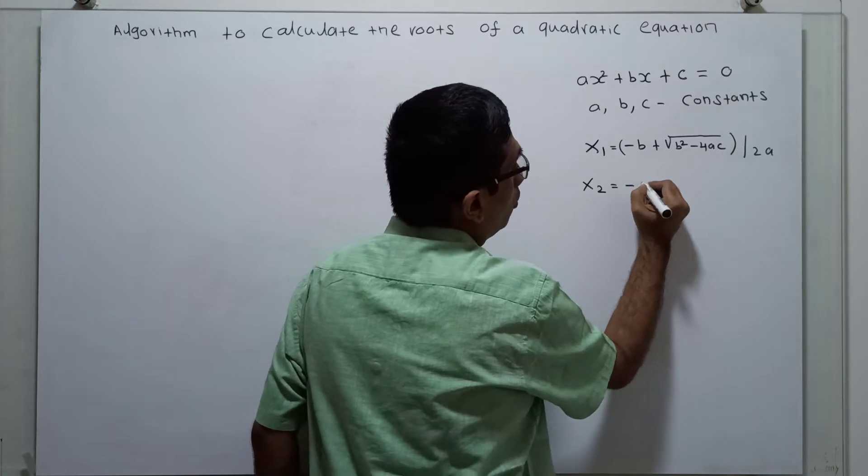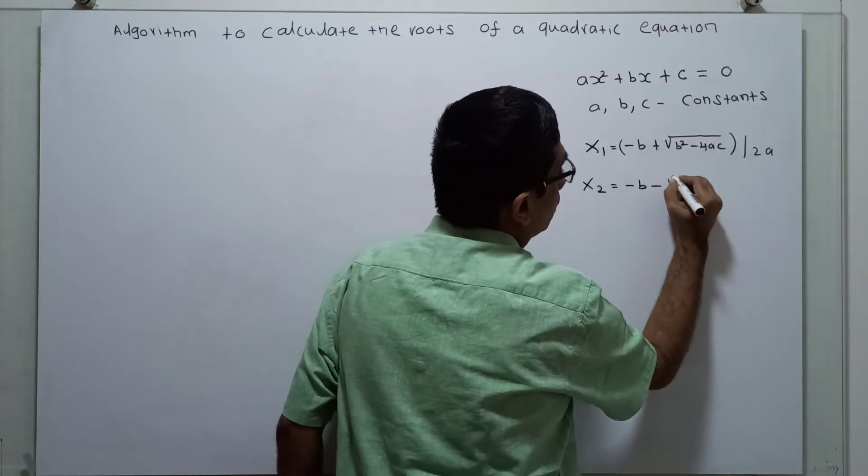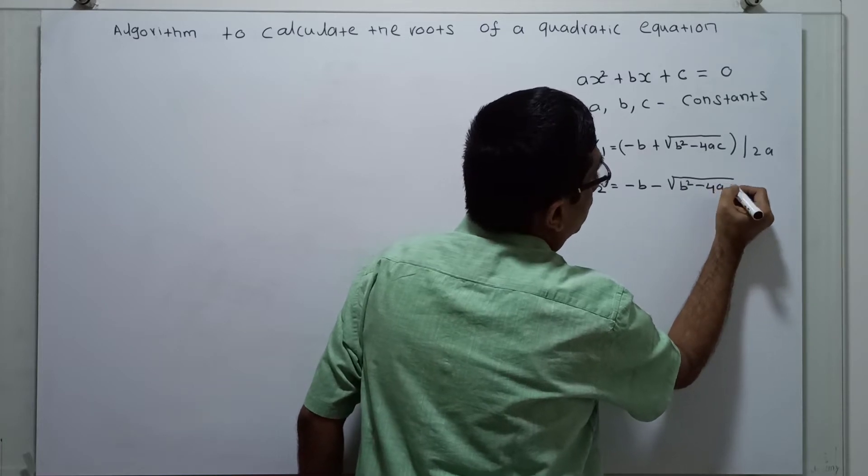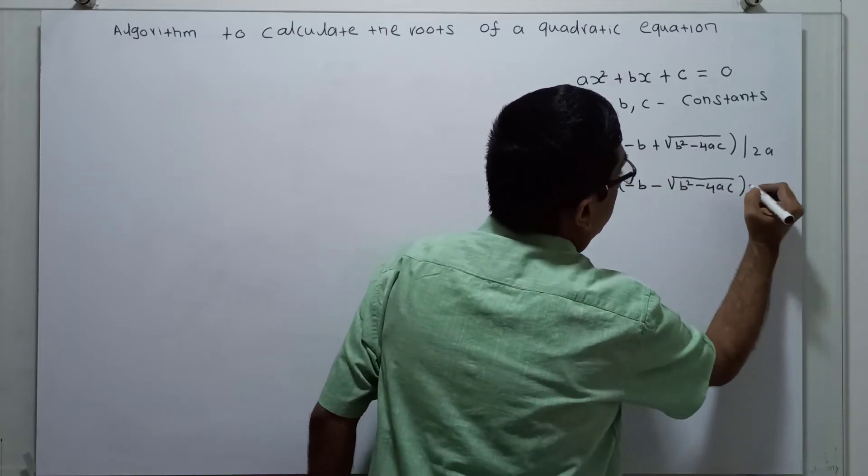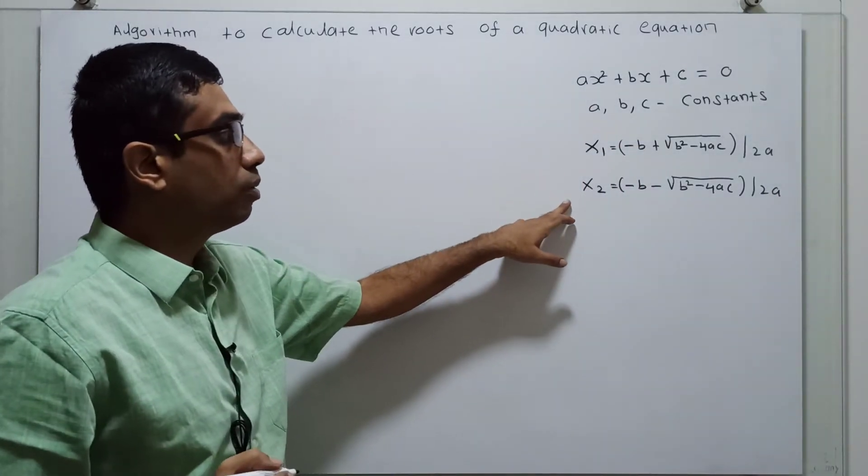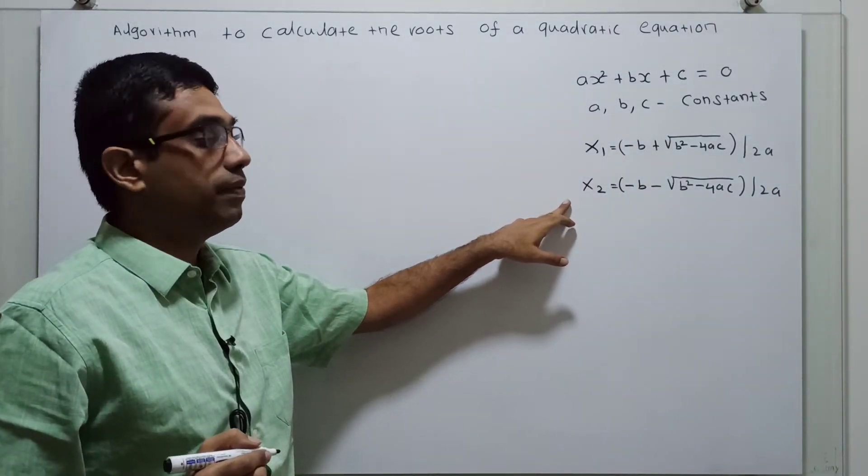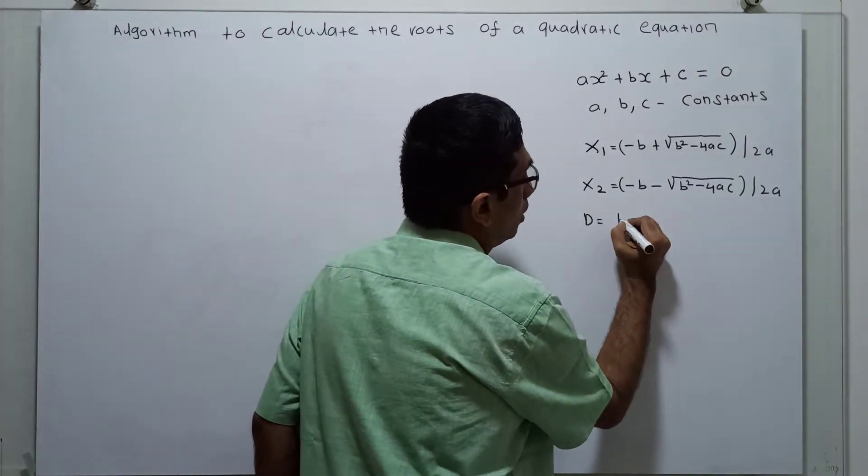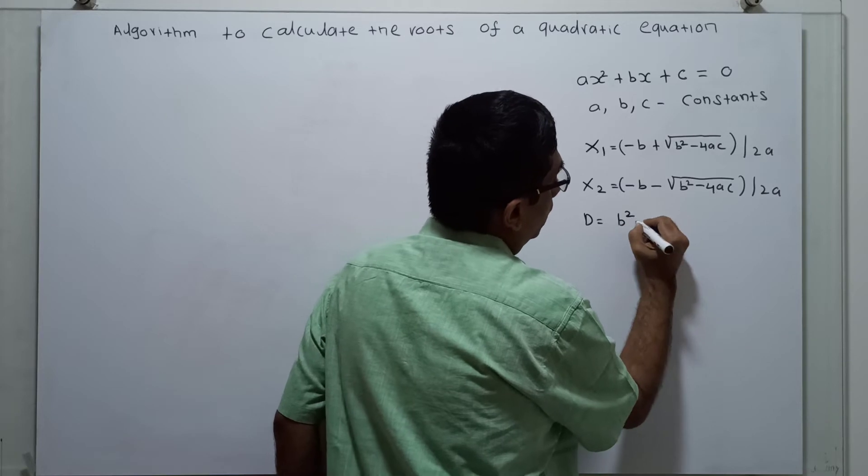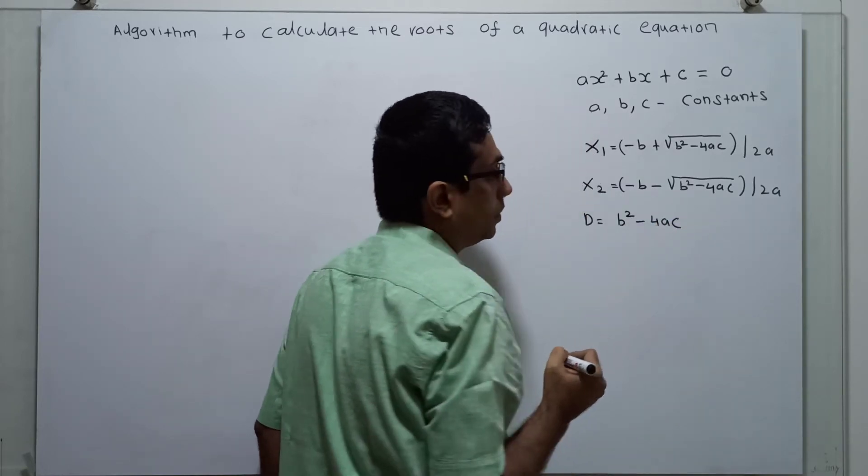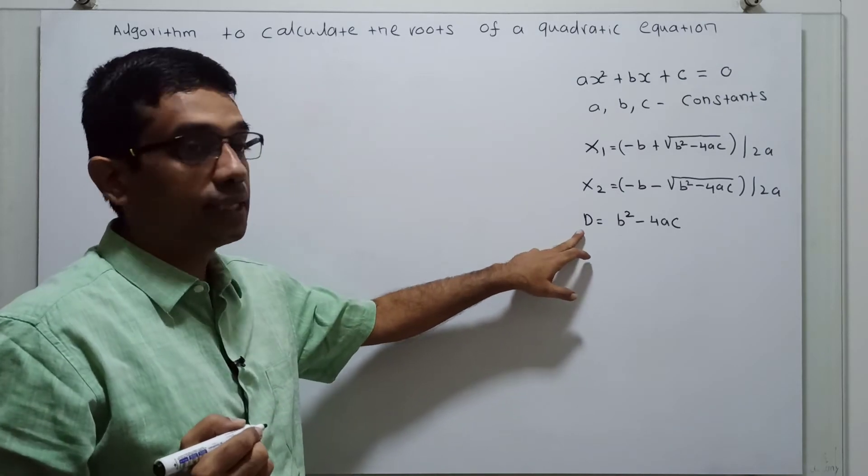x2 equal to minus b minus square root of b square minus 4ac divided by 2a. So, the x1 and x2 are the roots of the quadratic equation. The d which is equal to b square minus 4ac, this is known as a discriminant.